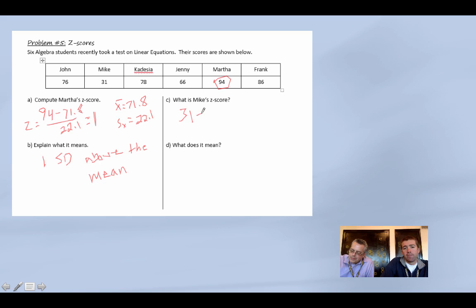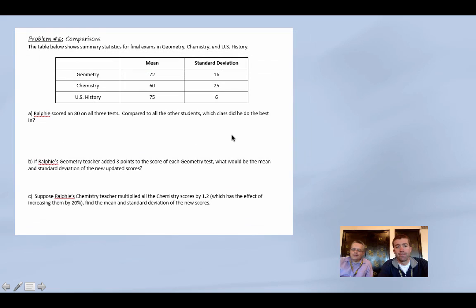Alright, let's do Mike. Mike needs a little help. Mike kind of bombed this one. So we got 31 minus 71.8 all over 22. I already think this is going to give us a negative number. Negative 1.85. So what does that mean? Well, Mike is negative 1.85 standard deviations below the mean. If they had a normal distribution, that means that he's like less than the third or fourth percentile. He's pretty down, almost like the two standard deviations below the mean.